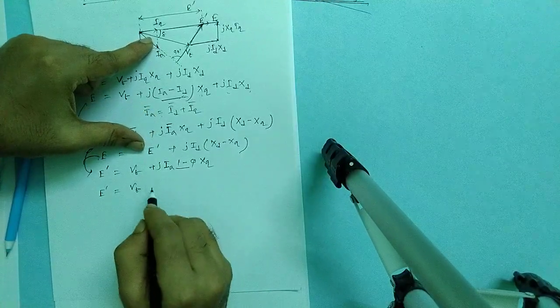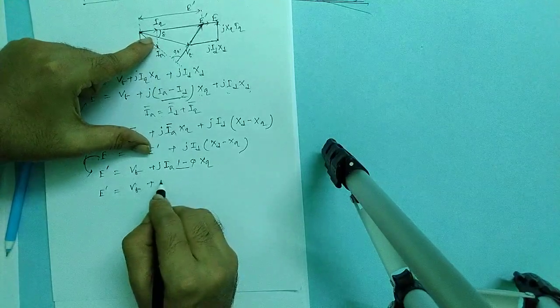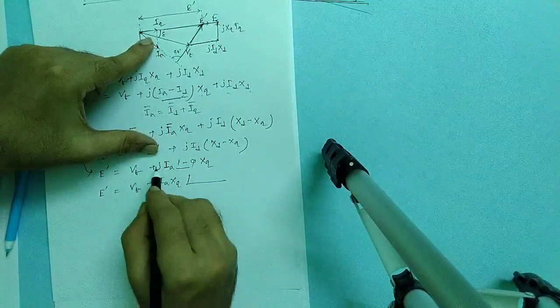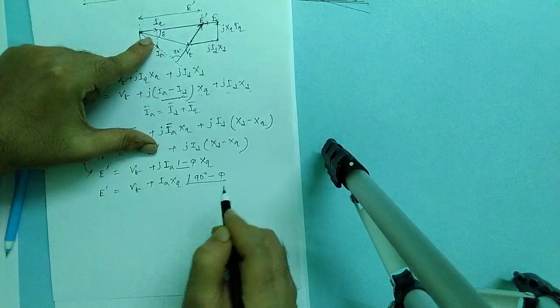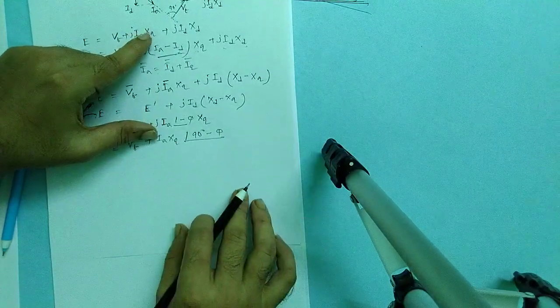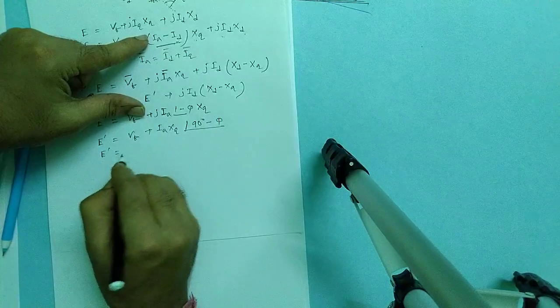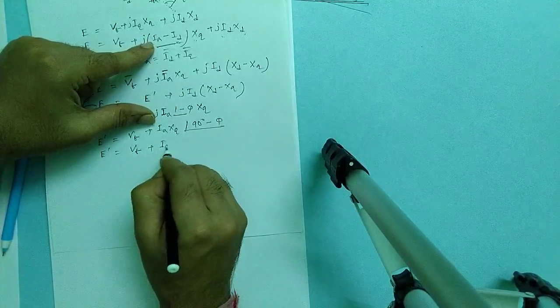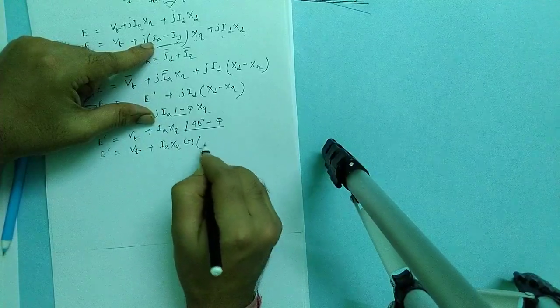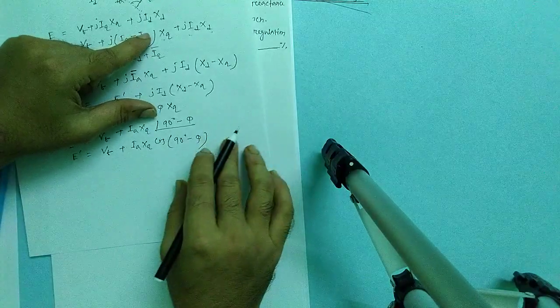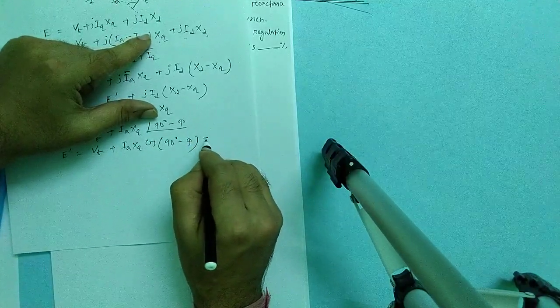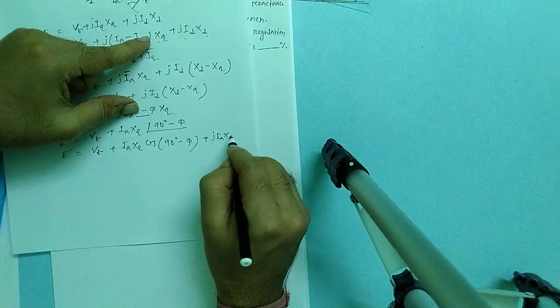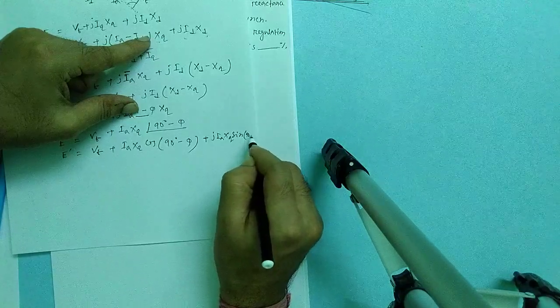What will be the value of E' dust? So let's see, V_t plus i_a X_q at an angle for J 90 degree minus phi. So E' dust will be V_t plus i_a X_q cos of 90 degree minus phi plus J of i_a X_q sin of 90 minus phi.